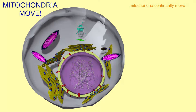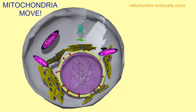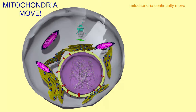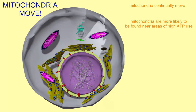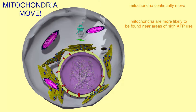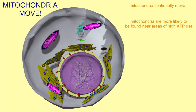Mitochondria are dynamic organelles continually on the move. They are more likely to be found near areas where ATP use is high, and they can move along microtubules using proteins known as kinesin and dynein.